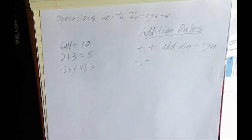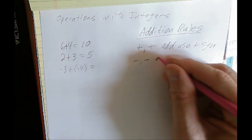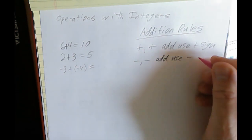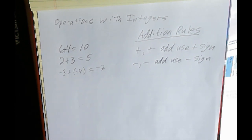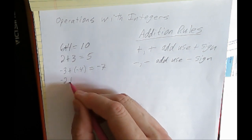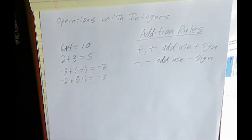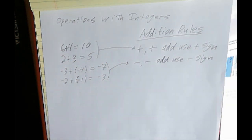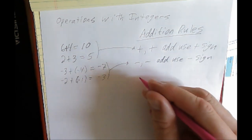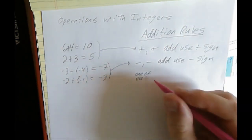What if you have a negative plus a negative, like -3 + (-4)? The rule is that you're going to add, use the negative sign. -3 + (-4). If you add those together, it's negative seven. -2 + (-1) is -3. Simple so far.